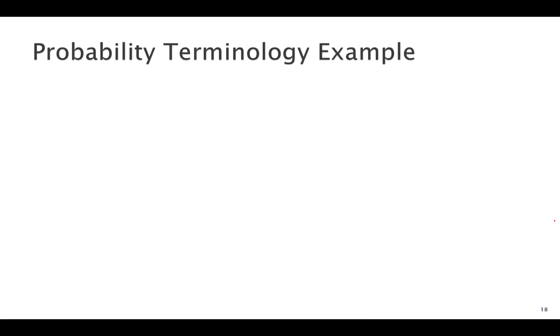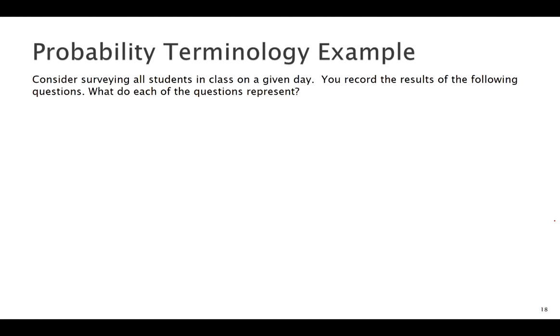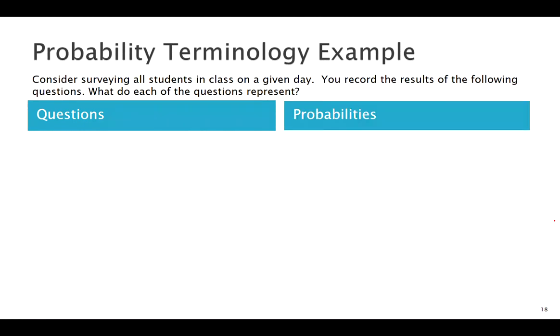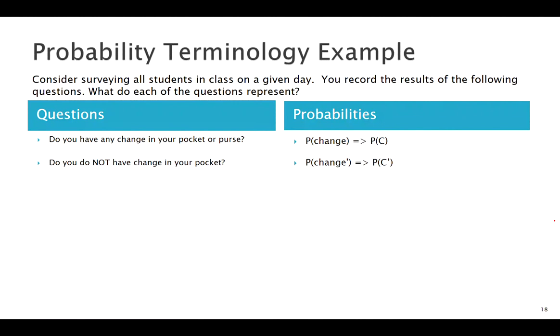Next, let's look at an example to pull together some of this terminology. We're not necessarily going to solve for all these probabilities, but we're going to pull together the terminology. Say we surveyed all the students in our class and asked them a list of questions, then try to write them in probability notation. What probabilities do they represent? The question we ask: do you have change in your pocket? This would be the probability of having change, call it event C. What about do you not have change in your pocket? This would be the complement of having change. What about did you ride the bus today? Probability of riding the bus, let's call that event B.